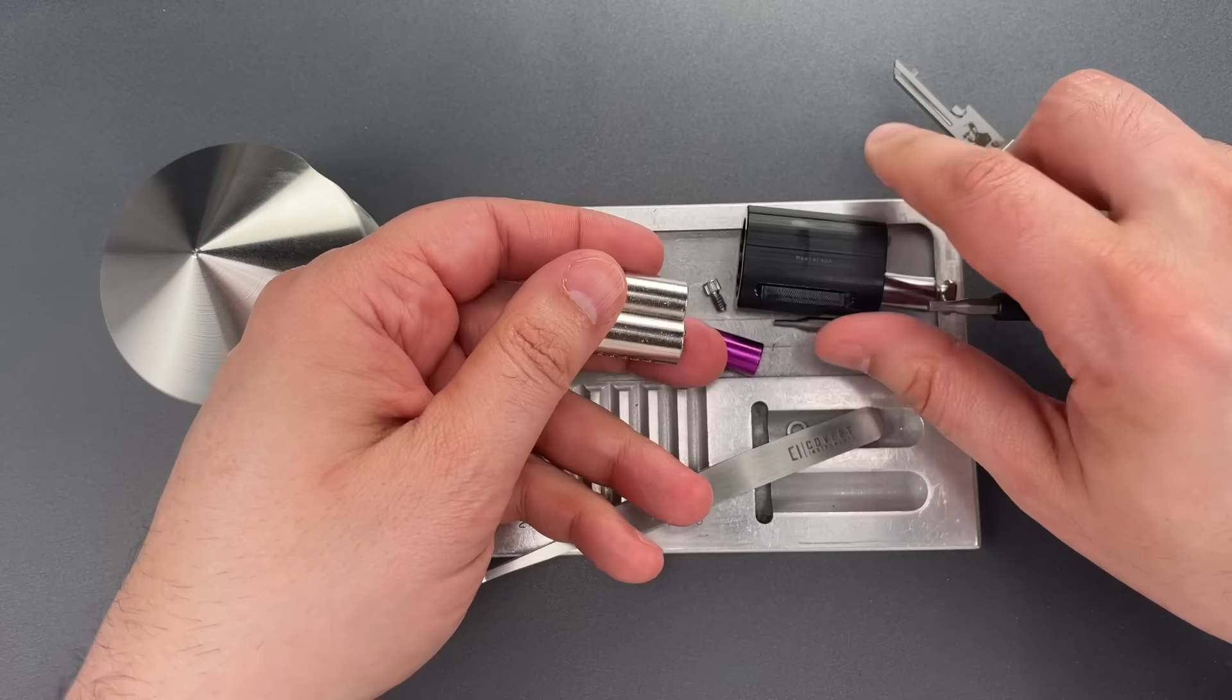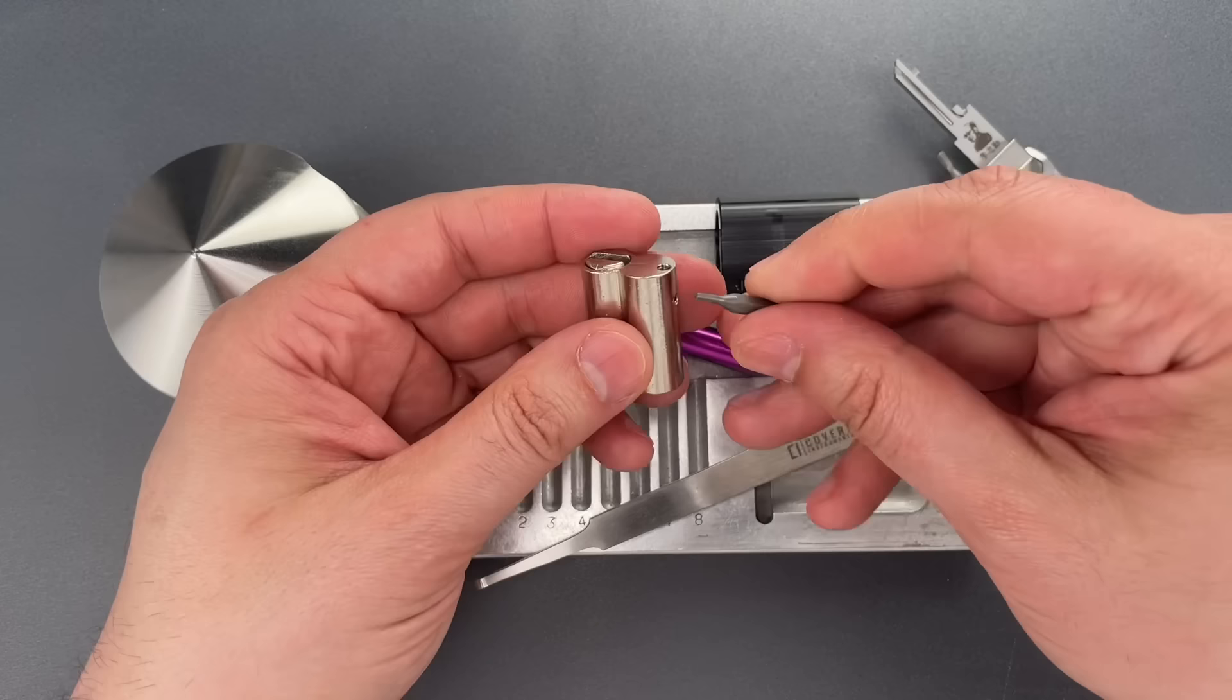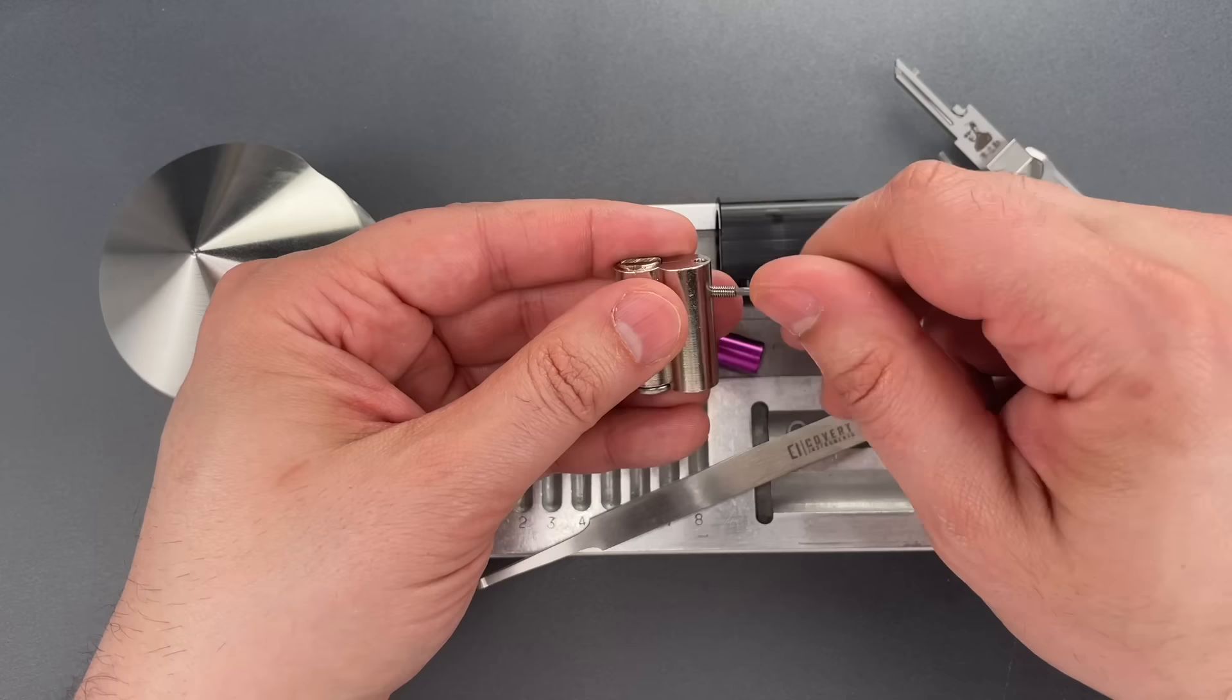Now to release the core we need to do a couple things. First remove a little set screw, then all I should need is a key and the follower.